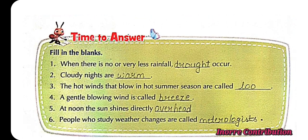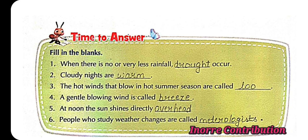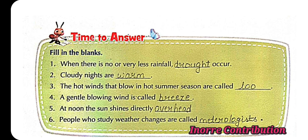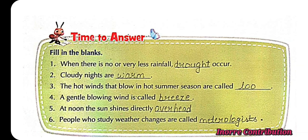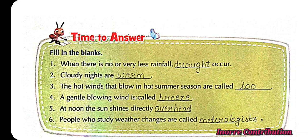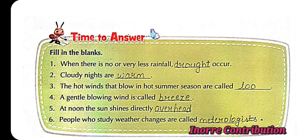Time to answer. Fill in the blanks. 1st: When there is no or very less rainfall, drought occurs. 2nd: Cloudy nights are warm. 3rd: The hot winds that blow in hot summer season are called loo. 4th: A gentle blowing wind is called breeze. 5th: At noon, the sun shines directly overhead. 6th: People who study weather changes are called meteorologists.